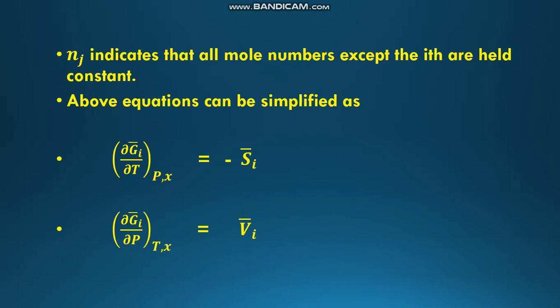Here n_j indicates that all mole numbers except the i-th are held constant. We can simplify the above equations as: (∂Z_i bar/∂T) at constant P and x (mole fraction) equals −S_i bar. Similarly, (∂Z_i bar/∂P) at constant T and x equals V_i bar.